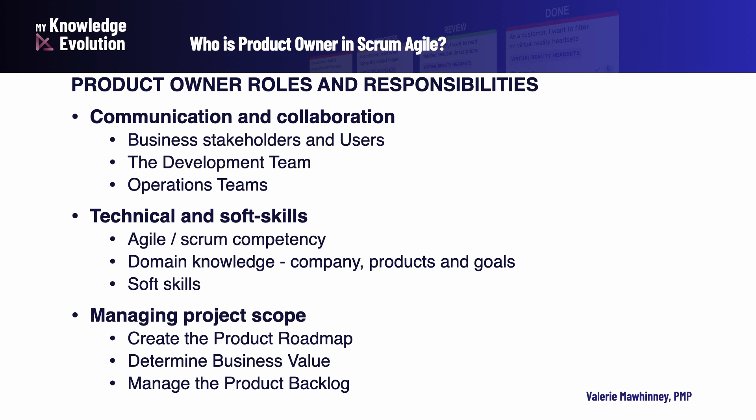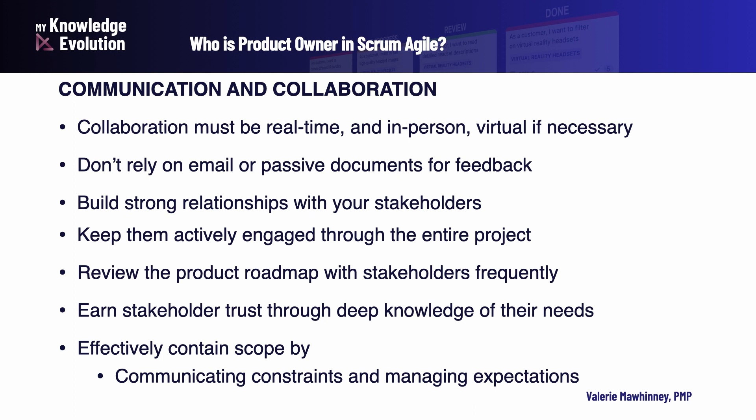Let's review the Product Owner roles and responsibilities. Communication responsibilities include: collaboration must be real-time, in-person, or virtual if necessary — don't rely on email or passive documents for feedback. You need to build strong relationships with your stakeholders and keep them actively engaged through the entire project, especially by reviewing the product roadmap with your stakeholders frequently, weekly if you can. Earn your stakeholders' trust through deep knowledge of their needs and effectively contain scope by communicating constraints and managing expectations.